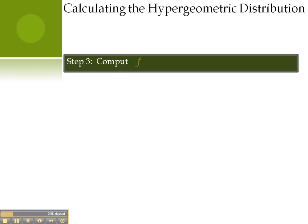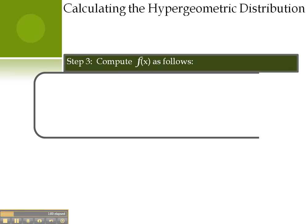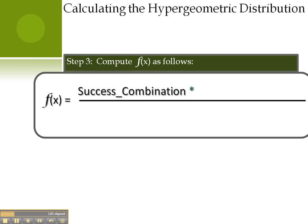We now continue to step three. Once we've calculated the variables in the previous step, it becomes an easy matter to put them into our formula. Simple multiplication, then division.